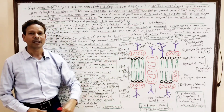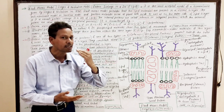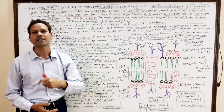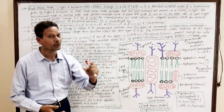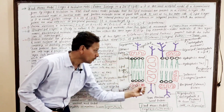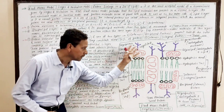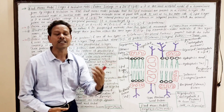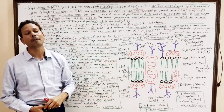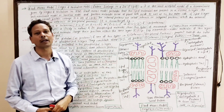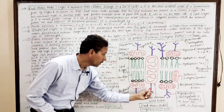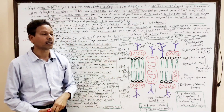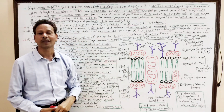This Fluid Mosaic Model was given by Singer and Nicholson in 1972, and it is the best accepted model of a cell membrane. According to this Fluid Mosaic Model, the phospholipid molecules present in the cell membrane are found in a viscous bilayer — like the Unit Membrane Model, the Lamellar Model, and the Robertson Model.